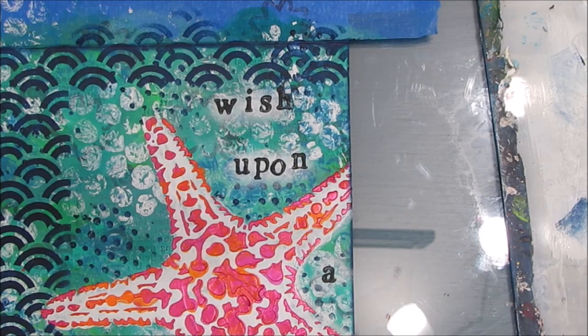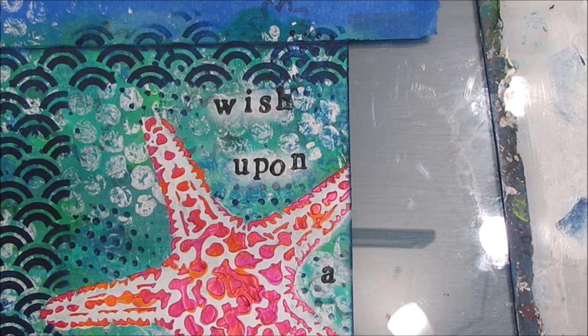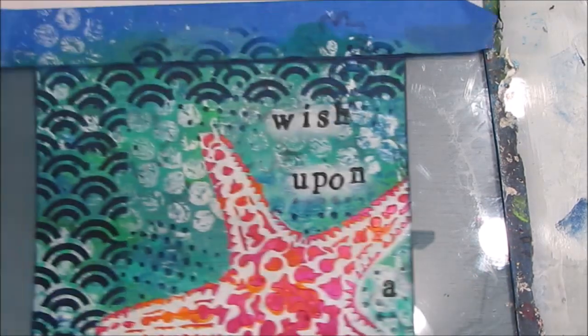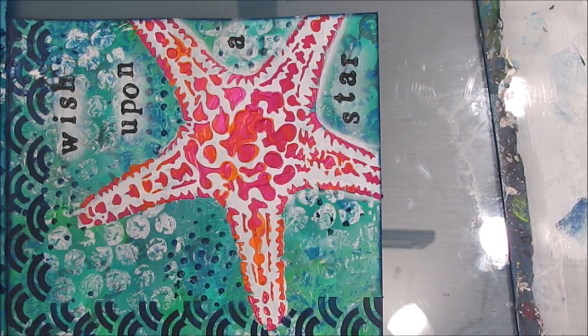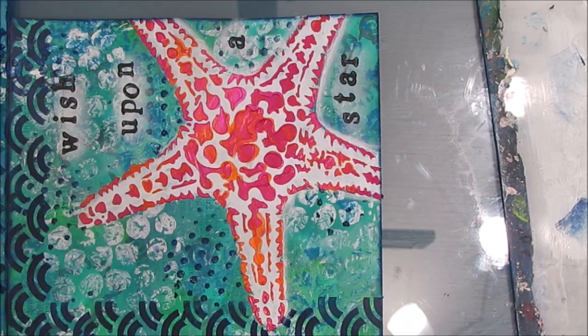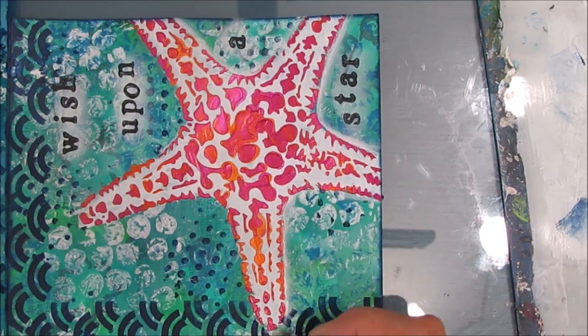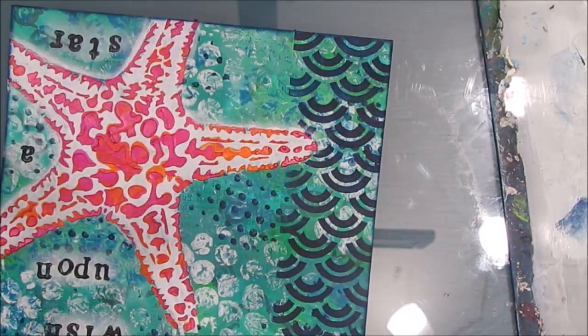Now I'm using white acrylic paint—the floating acrylic technique of shading—and I'm just going around the starfish just to bring it out a little bit more.